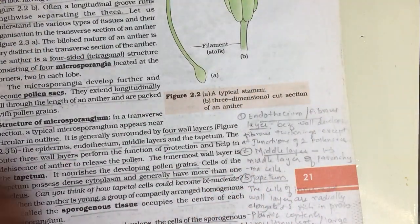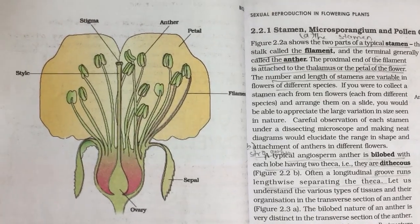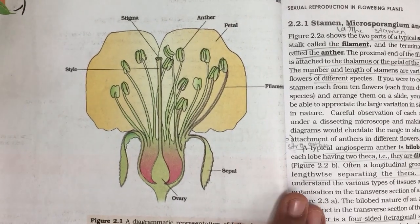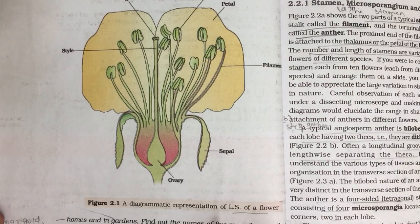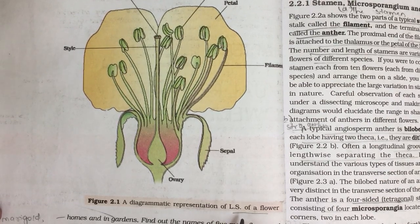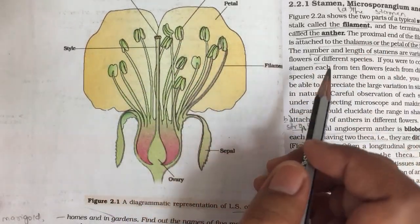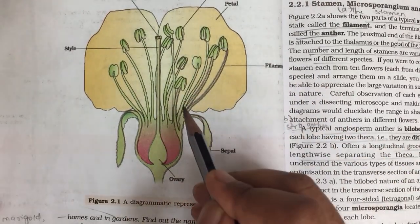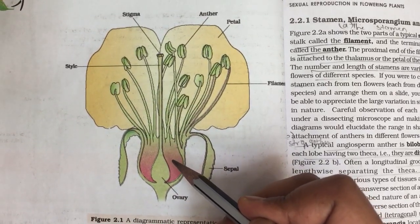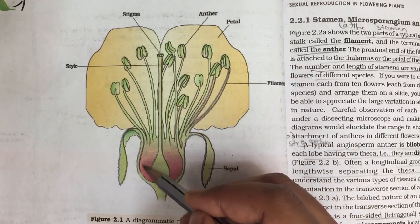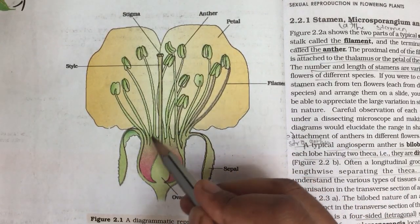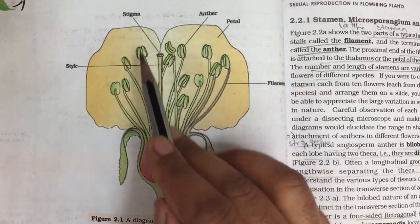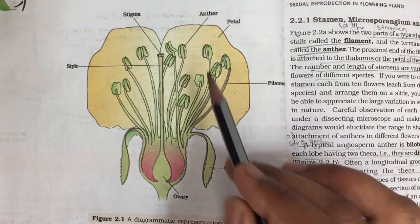The first important part of this chapter is the diagram — a diagrammatic representation of the longitudinal section (LS) of a flower. You may have drawn a similar diagram since sixth or seventh standard. In this diagram you will find the thalamus, which is the enlarged portion, and on the thalamus there is presence of sepals and petals — the technical terms being calyx and corolla.